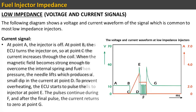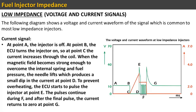Current signal for low impedance injectors: At point A the injector is off. At point B the ECU turns the injector on, so at point C the current increases through the coil. When the magnetic field becomes strong enough to overcome the internal spring and fuel pressure, the needle lifts, which produces a small dip in the current at point D. To prevent overheating, the ECU starts to pulse the injector at point E. The pulses continue during F, and after the final pulse the current returns to zero at point G.